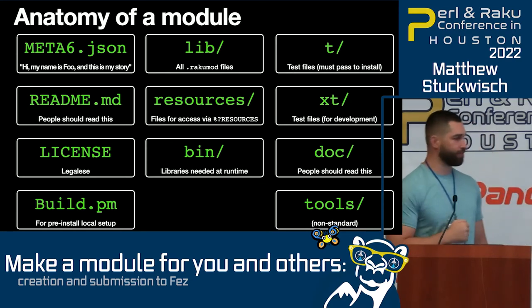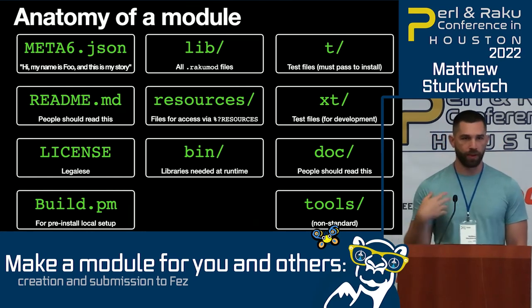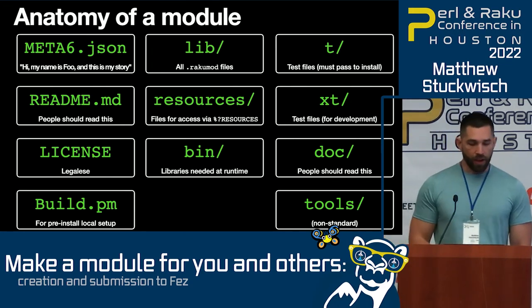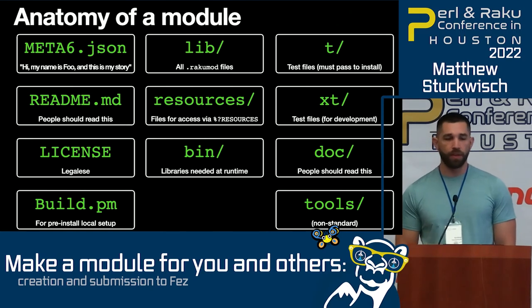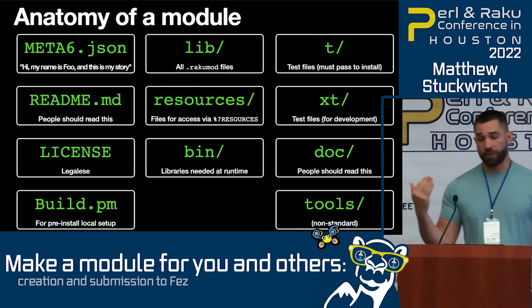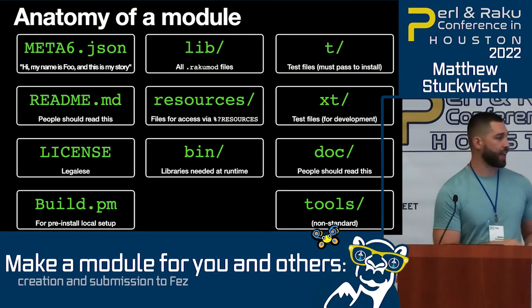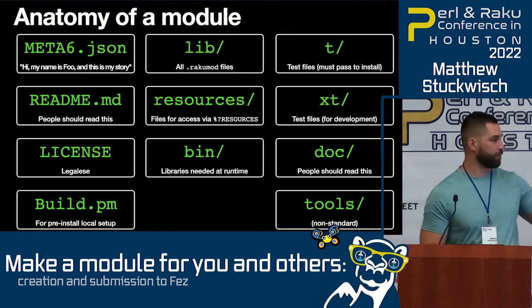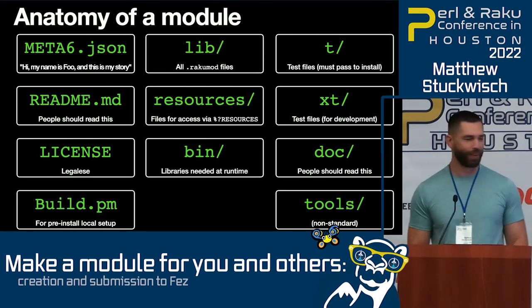Then you've got your README file - people should read it. Most of the time this is in markdown format, because that works very nicely when people are viewing it on GitHub, since GitHub doesn't quite understand pod6. Your license - most people, just like from the Perl world, use the Artistic 2 license. And then you've got the build file. You don't see it very often in many modules, but if somebody's installing a module and there's some sort of local setup needed before the install actually happens, you can write some extra code in this file and it'll handle it. That's the file name that the Zef documentation still uses - build.pm, but it can be a Raku mod now.